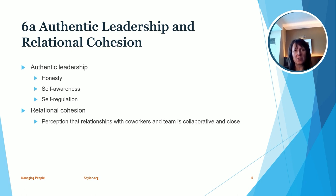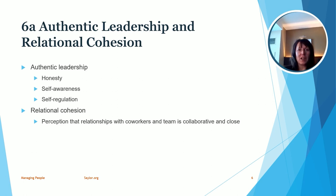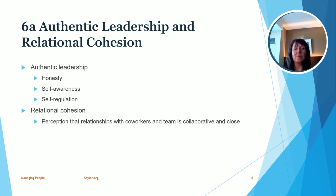The authentic leader has these characteristics which make them effective, especially when they're managing teams. We can also look at that in relation to relational cohesion. Relational cohesion is your perception that you have good relationships with the people that you're working with. The higher perception you have that you work well with your team members, that you're all collaborative and close, the better the team is going to function. Authentic leaders are better able to create relational cohesion among their teams because of those qualities they possess.